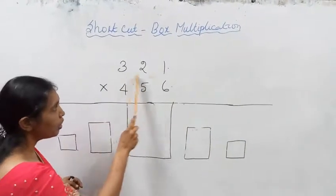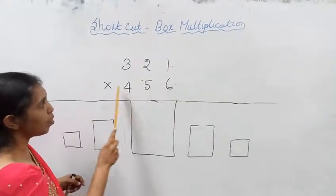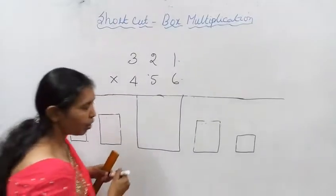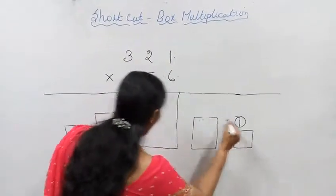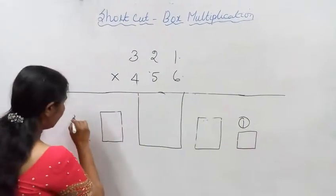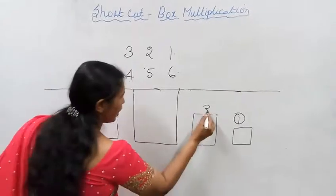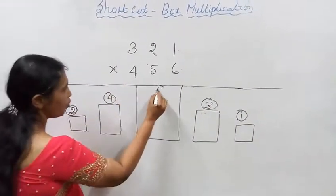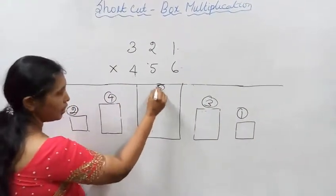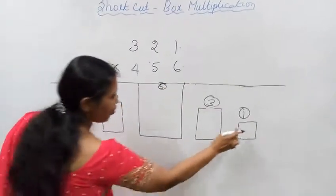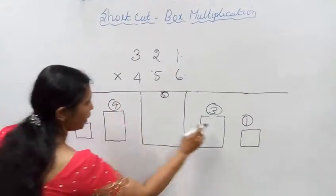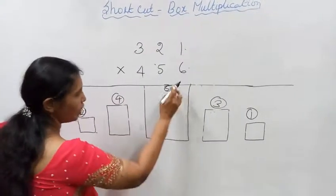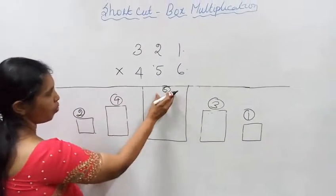Now I am going to do 3-digit number by 3-digit number. Then what you are going to do: 1st box, 2nd box, 3rd box, 4th box, 5th box. Are you able to follow me? The center one is the 5th box.